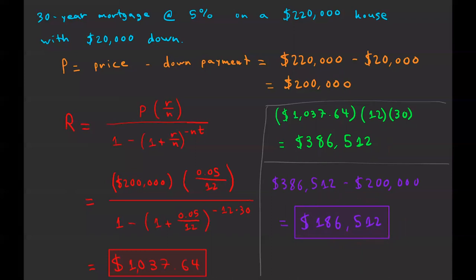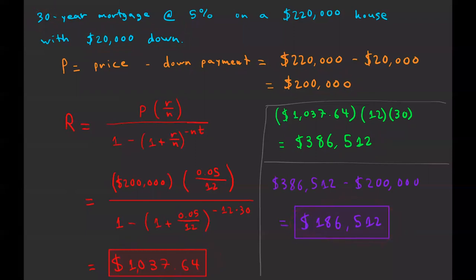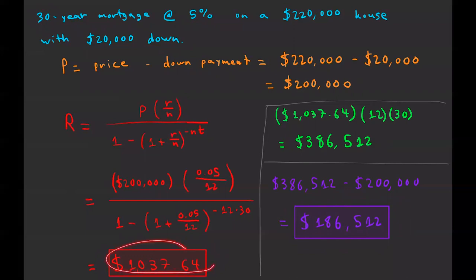Mortgages can get scary — you can pay a lot for a house. The ways to cut down this interest amount: you could make a larger down payment so you finance less money; you could shrink the lifetime of the mortgage to 15 years — yes, that increases your monthly payments, but it decreases the total interest; or you could get a lower interest rate, though that's typically harder since you don't have much choice there. You have more choice on how much you put down and how long your loan is for.